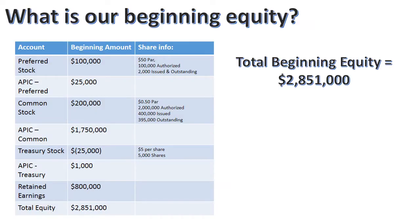Let's figure out our beginning first. Breaking it out in a table, you can see there's your preferred stock APIC, common stock APIC, Treasury stock APIC, retained earnings, and then total equity. Our total equity begins with $2,851,000.